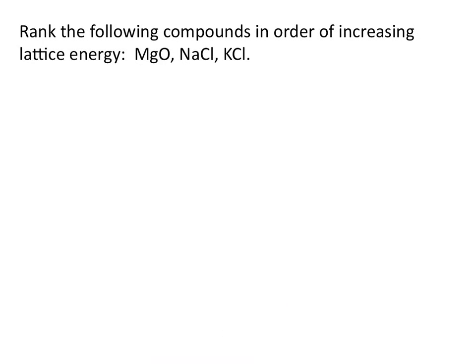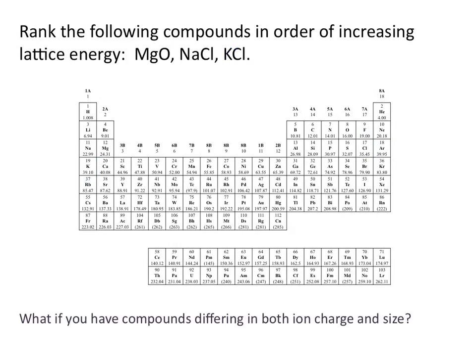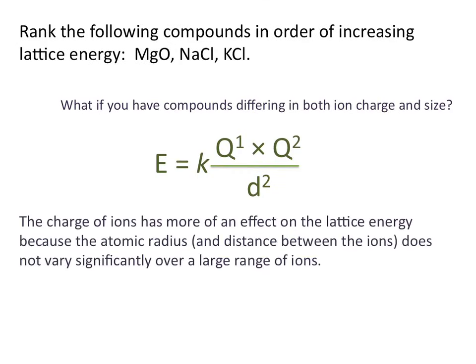Let's look at another example. Rank the following compounds in order of increasing lattice energy: magnesium oxide, sodium chloride, and potassium chloride. First, let's locate where these elements are on the periodic table. When comparing compounds that differ in both ion charge and size, remember that the charge of ions has more of an effect on the lattice energy because the atomic radius and distance between ions does not vary significantly over a large range of ions.